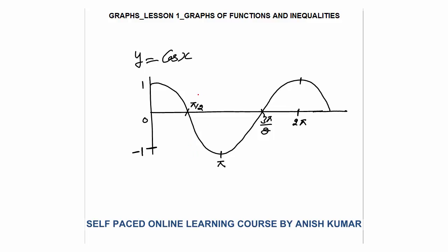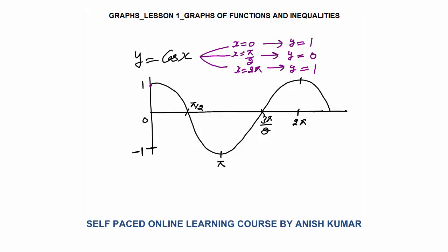Next is the graph of y is equal to cos x. Again a wave. When x is 0, cos 0 equals 1, so the value of y is 1. At pi by 2, the value of y is 0. When x is 2 pi, the value of y is again 1. The domain of this function is all real numbers. The range is again between minus 1 and 1, so the value of sin x as well as cos x lies between minus 1 and 1. The minimum value of cos x is minus 1 and maximum is plus 1.